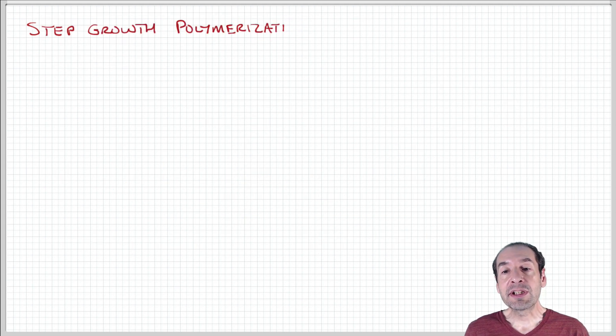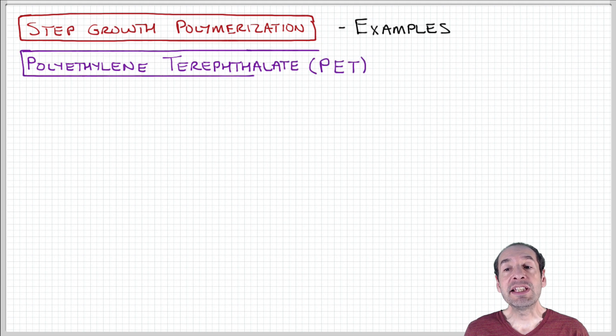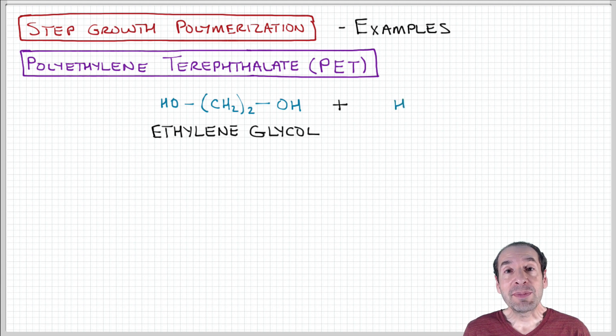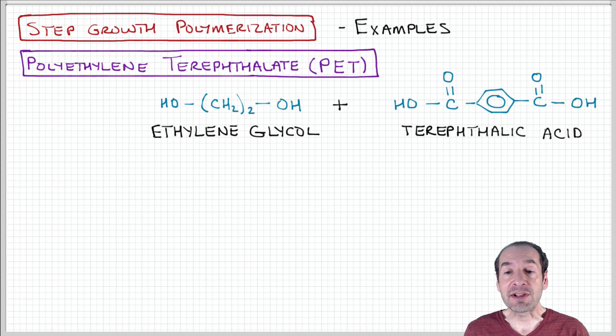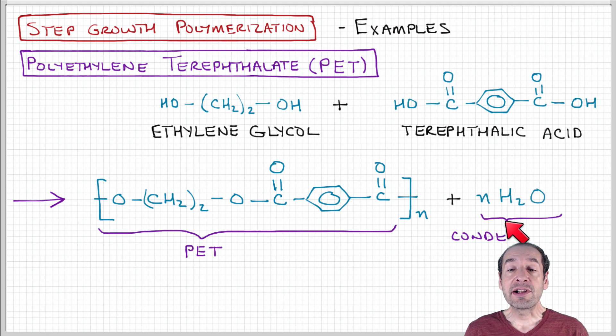Okay, another example of materials that are produced using step growth polymerization is polyethylene terephthalate or abbreviated PET. So this is maybe the most familiar polymerization, used to produce water bottles and soda bottles for disposable beverage containers. This polymer is formed by a combination of two monomer units, ethylene glycol and terephthalic acid. These two monomer units join to form the following repeat units shown here. And then water is a condensation product of this reaction.